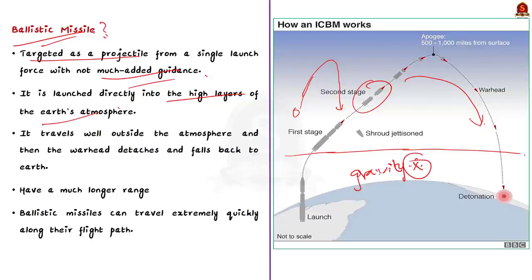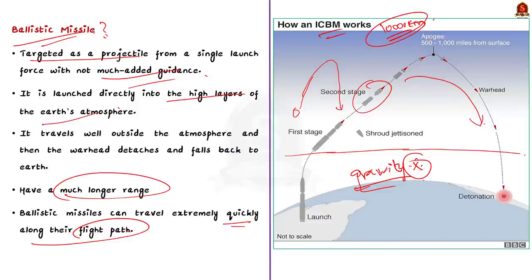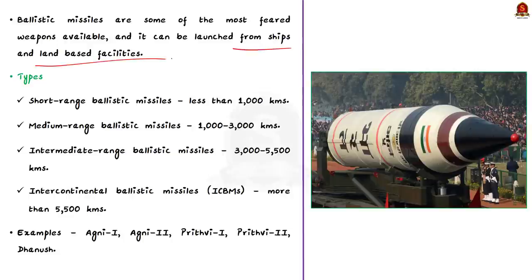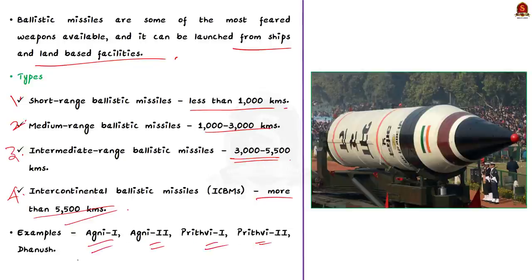See, ballistic missiles fly above the atmosphere have a much longer range than cruise missiles of the same size because ballistic missiles can travel quickly along their flight path. See, an intercontinental ballistic missile can strike a target within a 10,000 kilometer range in about 30 to 35 minutes. See, ballistic missiles are some of the most feared weapon available in the world and it can be launched from ships and land-based facilities. There are four general classification of ballistic missiles that is short range ballistic missile that travels less than 1,000 kilometers. And the second thing is medium range ballistic missiles that travels between 1,000 to 3,000 kilometers. And the third one is intermediate range ballistic missiles that can travel between 3,000 to 5,500 kilometers. And the final is intercontinental ballistic missile. It travels more than 5,500 kilometers. Some of the ballistic missiles in India are Agni 1 and 2, Prithvi series 1 and 2 and Dhanush.